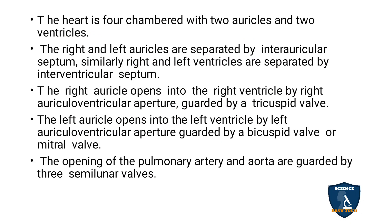The heart is four-chambered with two auricles and two ventricles. The right and left auricle are separated by the inter-auricular septum, and the right and left ventricle are separated by the inter-ventricular septum. The right auricle opens into the right ventricle by the right auriculoventricular aperture, which has three valves — that is called the tricuspid valve. The left auricle opens into the left ventricle by the left auriculoventricular aperture with bicuspid valve, or mitral valve.